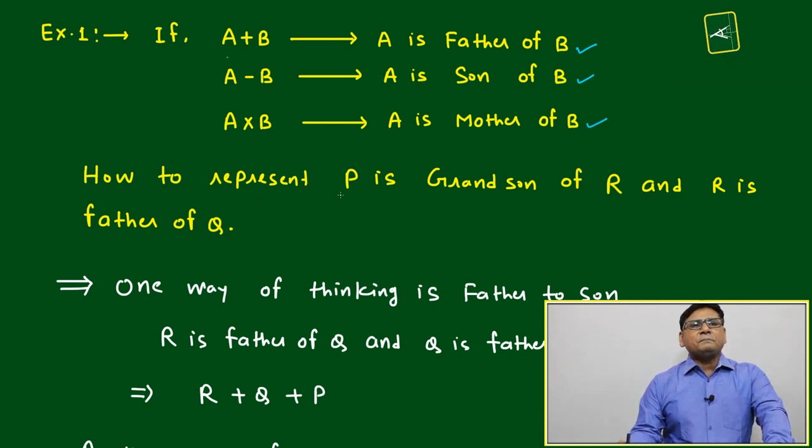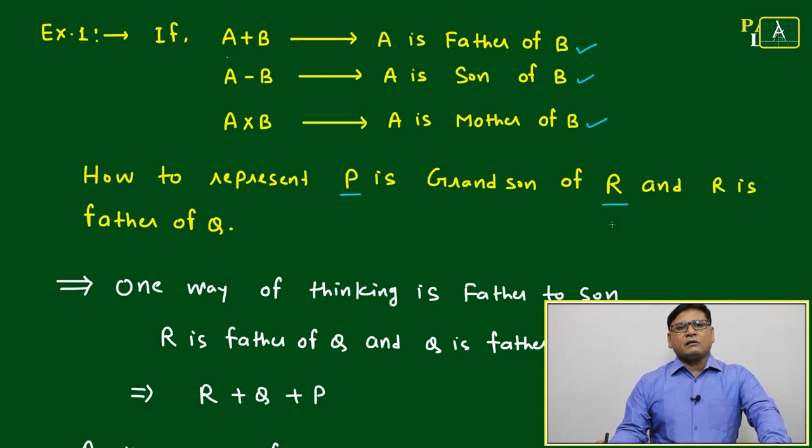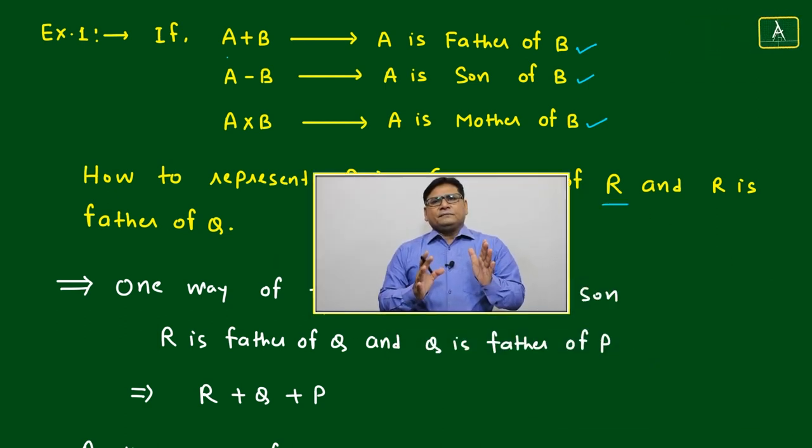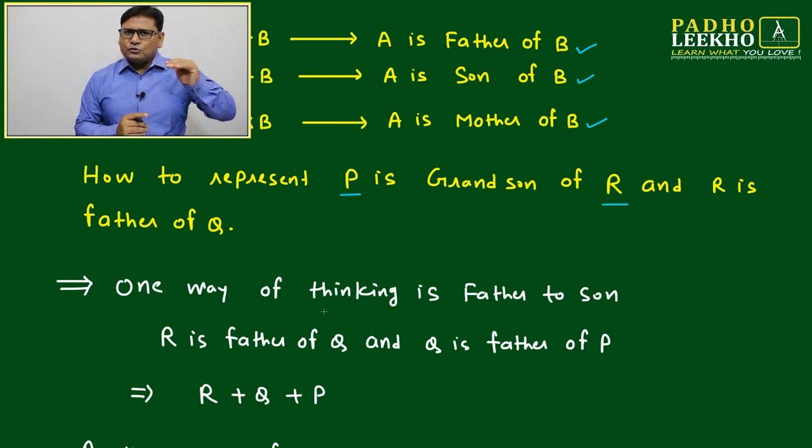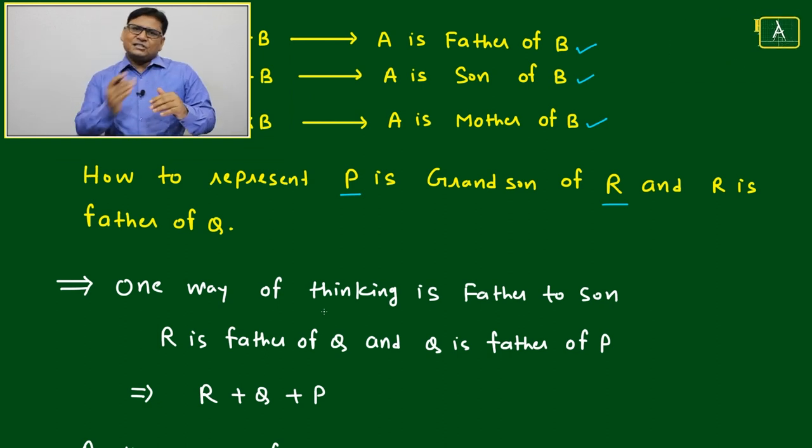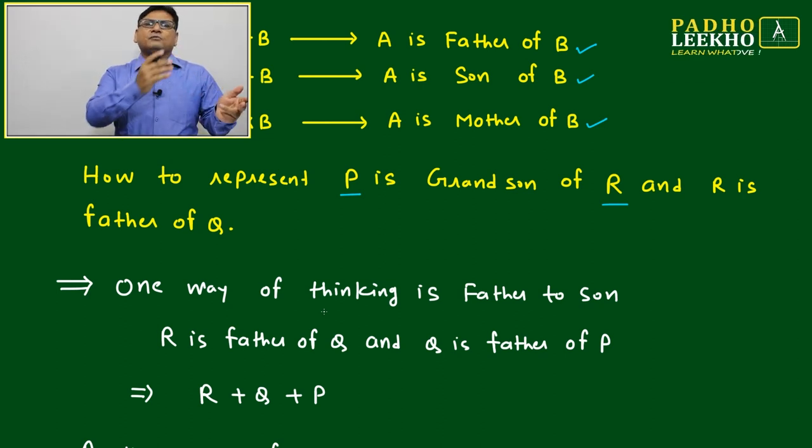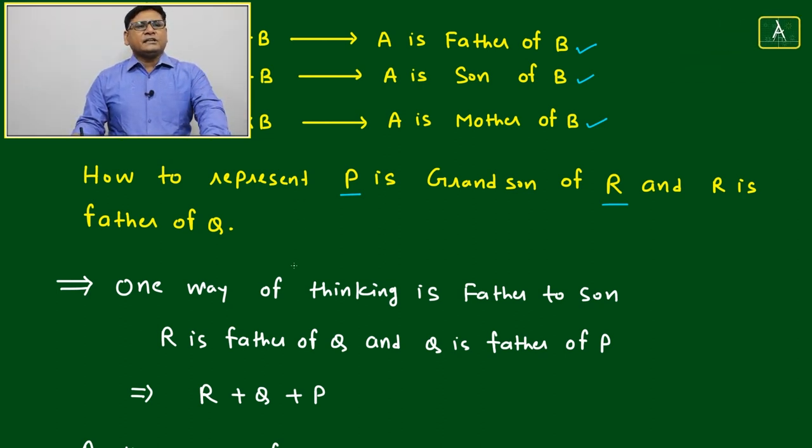How to represent P is grandson of R and R is father of Q? One way of thinking in these types of questions: either we can think from father to son, or we can think the opposite way from son to father. Both ways we can represent the relation.